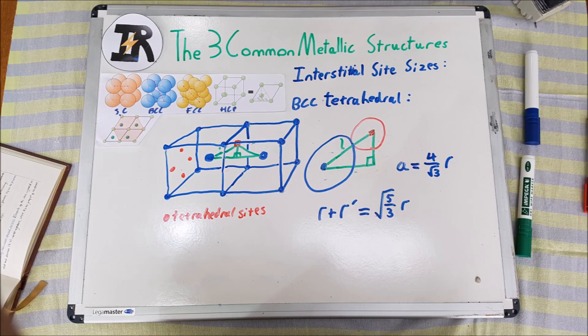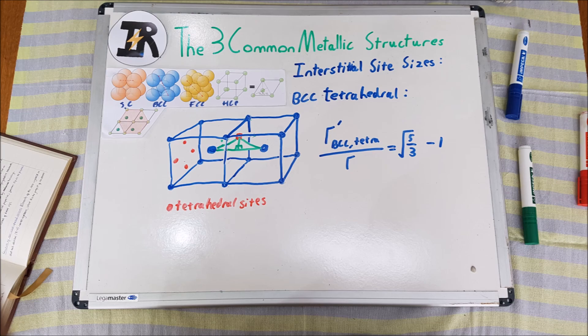Using our R to A ratio, and knowing that the distance L is equal to R + R' due to the fact that the tetrahedral hole and the atom at the center make contact, we can then equate the utmost equation and the lowest equation together in terms of R and R', and by rearranging, we obtain our radius ratio, which is a value of √(5/3) - 1.